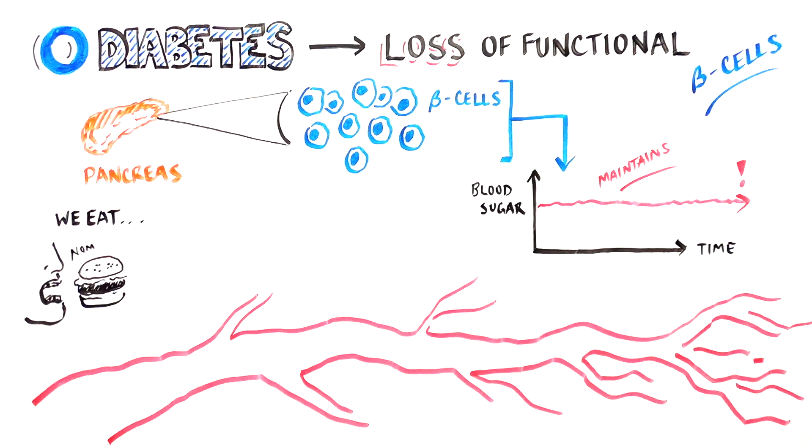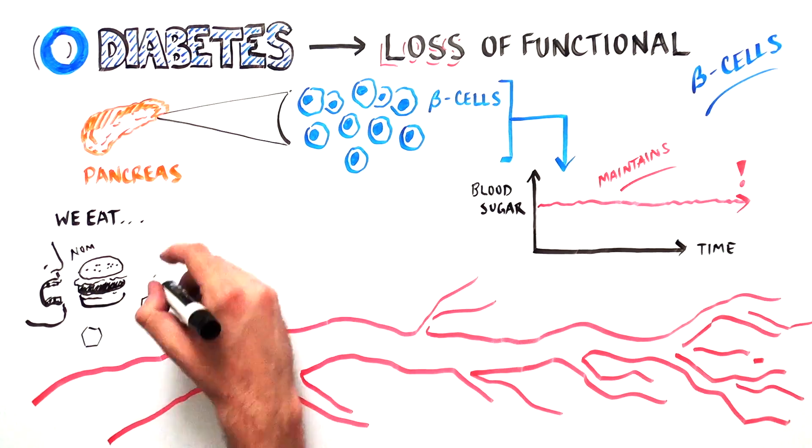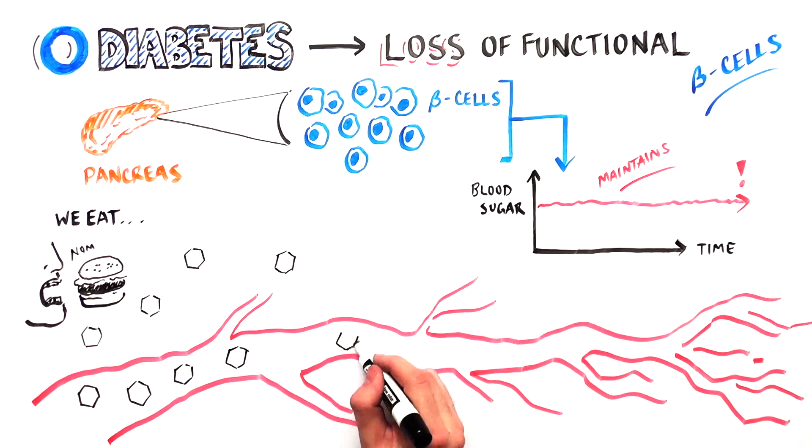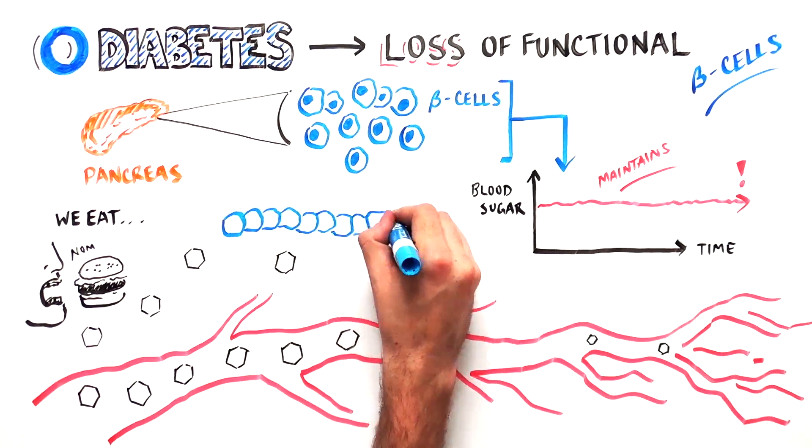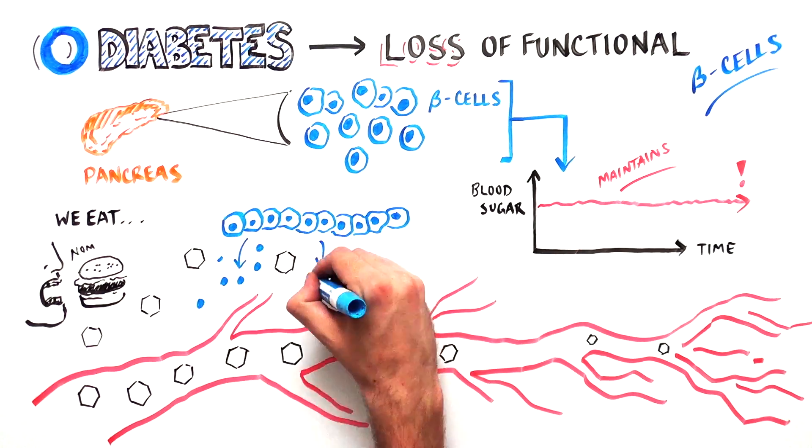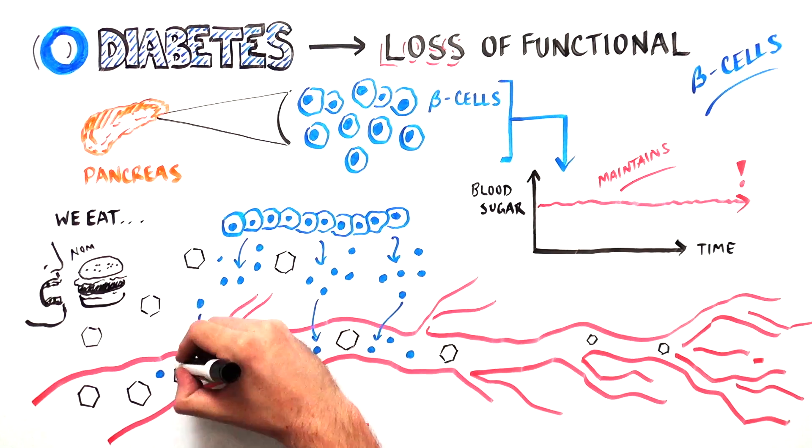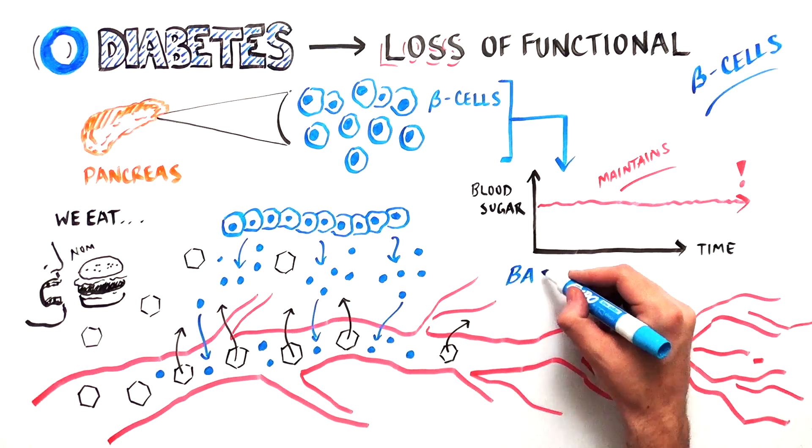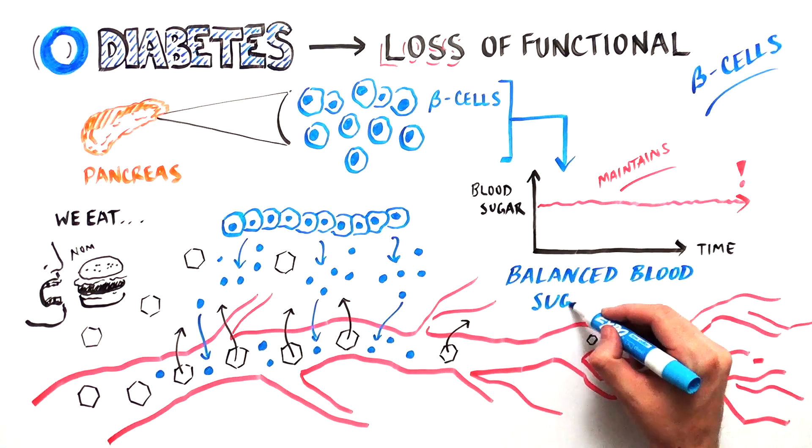Here's how it works. When we eat, the carbohydrates, or sugars, enter the blood and this activates beta cells to start producing insulin. Insulin is a hormone that allows your body to make use of and store sugar. In doing so, it maintains a balanced blood sugar level.